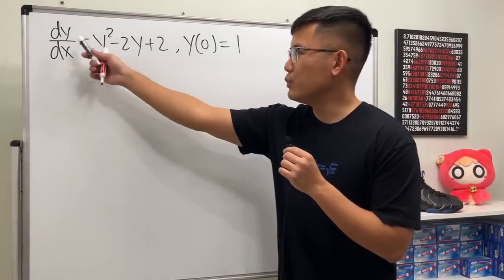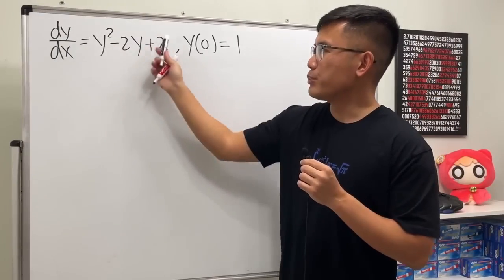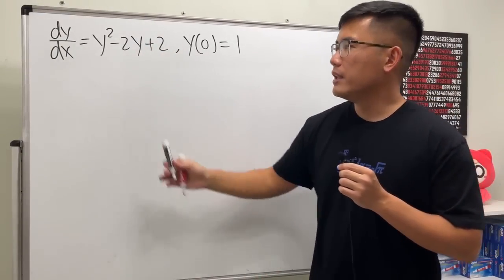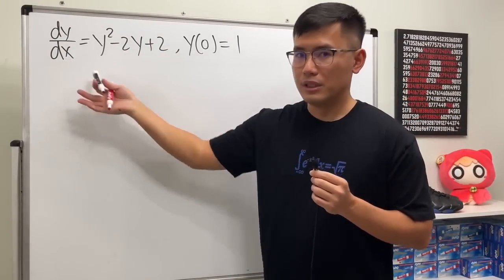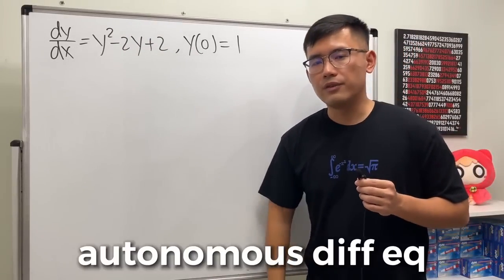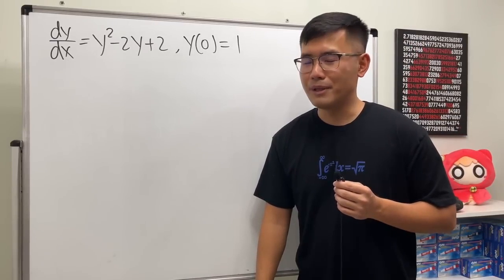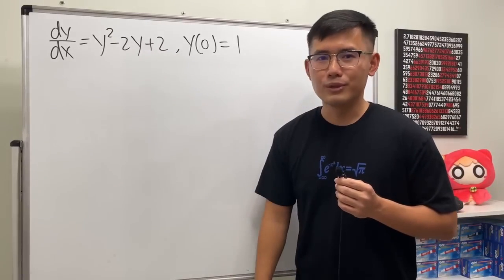And now for the second one, notice that we have dy/dx = y² - 2y + 2. This expression does not depend on x, namely the independent variable, sometimes t. This is a special case called the autonomous differential equation. It's really cool, and here's the thing: the best part is that this is also separable.